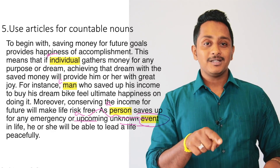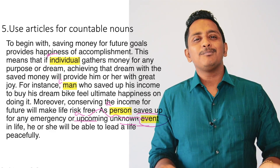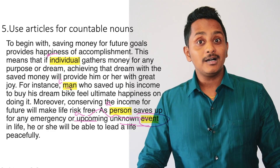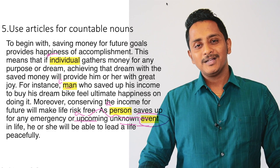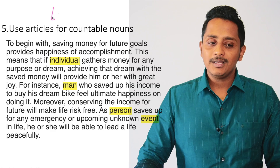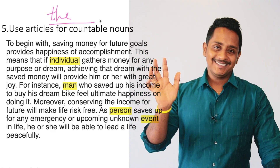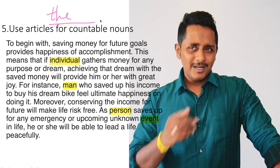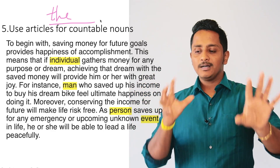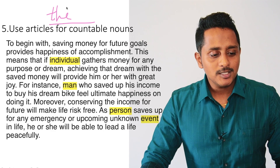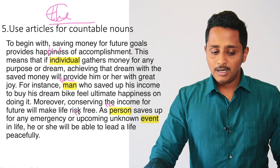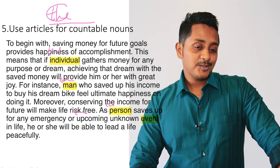Add articles wherever possible so your marks go up. If you write 'if individual' or 'for instance man' without an article, marks will go down. If you're confused whether to use 'a,' 'an,' or nothing, a simple shortcut: just use 'the' — it works for any noun. 'The individual,' 'the man,' 'the upcoming unknown event' — these all work fine.